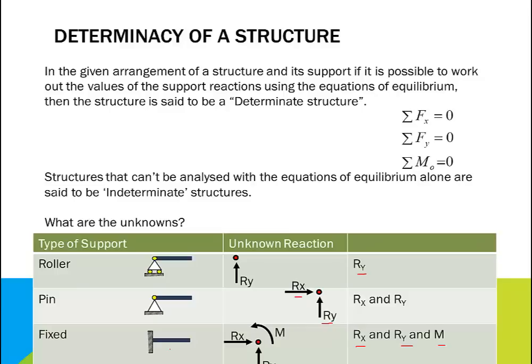If there is a fixed support for the beam, there are three unknowns, so no additional supports can be provided if the beam is to be analyzed, because we have only three equations of equilibrium. If there is a pin support, which gives two unknowns, the only other additional support is a roller with one unknown, so the total is not more than three. If there is a roller support, an additional pin support will allow us to analyze the beam. In each of these cases, we can determine the unknown support reactions, so we say the beam is determinate.